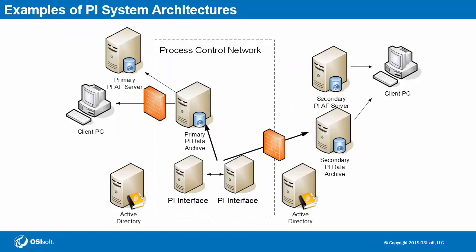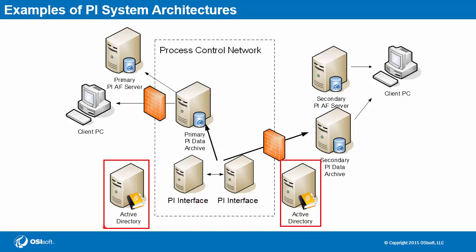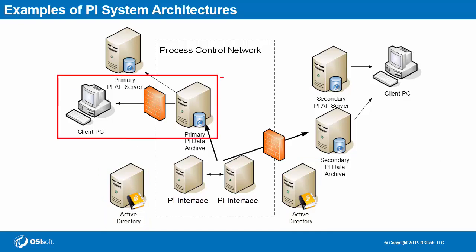In this next example there are multiple domains involved, as seen by these two domain controllers. This could resemble a really large corporation with sites located in different regions. This presents the most significant challenge in terms of network routing and security so far. On the left-hand side we see clients directly accessing the process control network for data, while on the right-hand side it appears necessary to place a PI data archive much closer to these users.